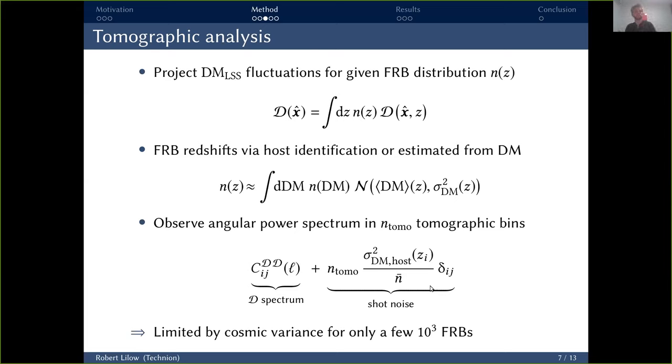Now, a large advantage of the FRBs over other probes is that this shot noise contribution is for all relevant distances much smaller than the intrinsic scatter of our signal. So effectively, that means our FRB analysis is limited by cosmic variance rather than shot noise for only a few thousand FRBs already, whereas you would need millions of galaxies to achieve the same in the galaxy clustering or shear analysis.